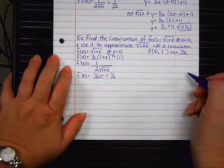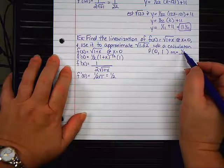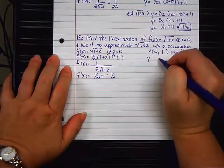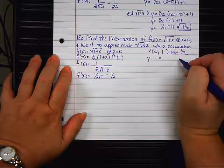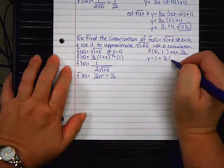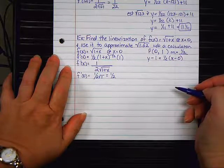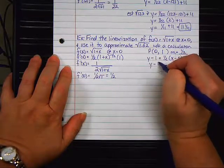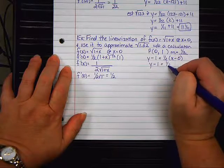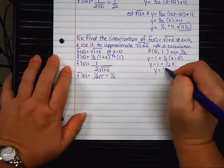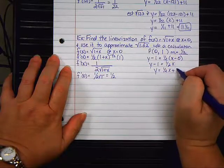So using that information, let's write the equation of the line. We start with y minus 1 equals 1 half parentheses x minus 0. This is not too ugly to clean up. Y minus 1 equals 1 half x. Y equals 1 half x plus 1.